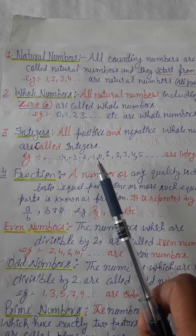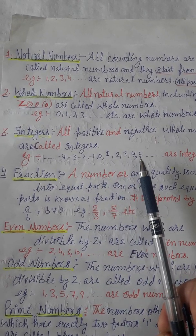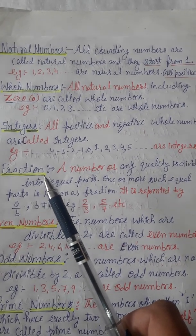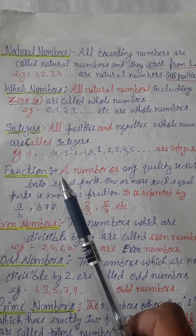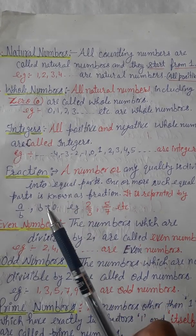Fractions: A number which can be represented in the form a/b, where b is not equal to zero, is a fraction.